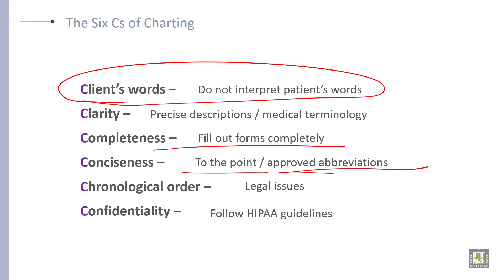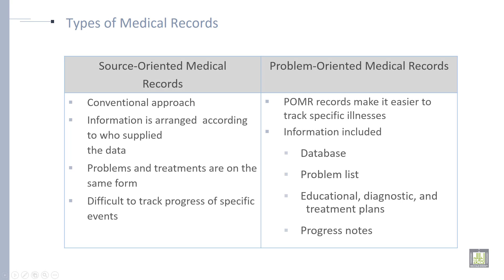Chronological order: it is a legal issue. And confidentiality: follow up guidelines. Those are the six C's of charting. Now, types of medical records.